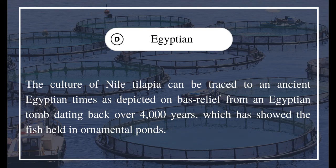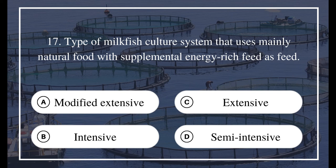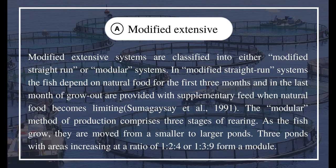The culture of Nile tilapia can be traced to ancient Egyptian times, as depicted on a bas-relief from an Egyptian tomb dating back over four thousand years, which shows the fish held in ornamental ponds. Question 17: Type of milkfish culture system that uses mainly natural food with supplemental energy-rich feed. A) modified extensive, B) intensive, C) extensive, D) semi-intensive. The answer is A) modified extensive. Modified extensive systems are classified into either modified straight-run or modular systems. In modified straight-run systems, fish depend on natural food for the first three months, and in the last month of grow-out are provided supplementary feed when natural food becomes limited.